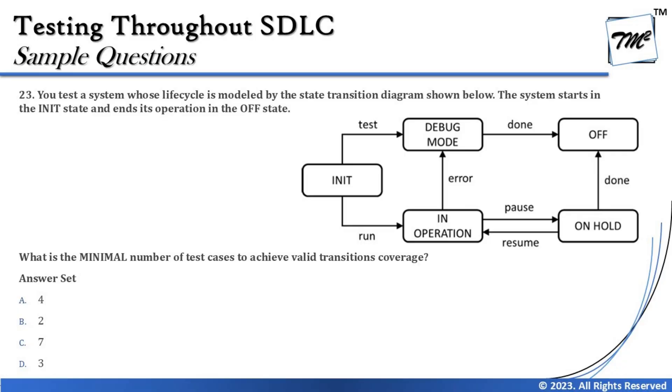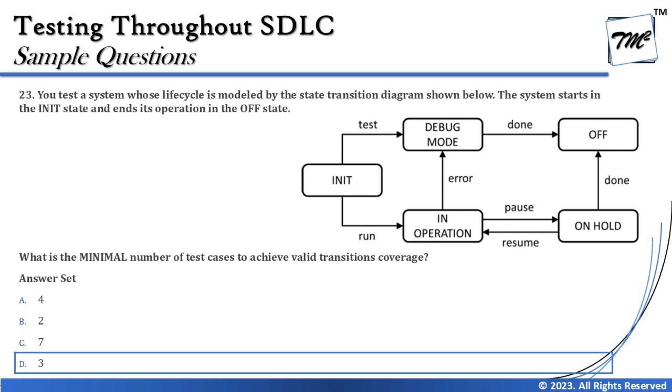If you don't understand, just rewind and watch again — it will make sense. The right answer to this question is D — three test cases are sufficient for minimum 100% valid transition coverage.